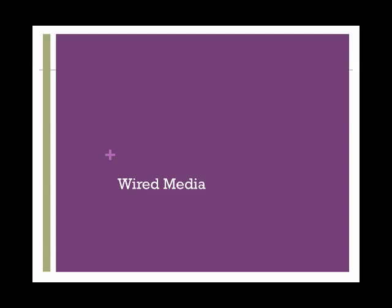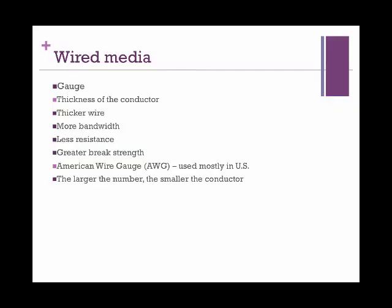Now let's get into the details of the transmission channels. We will begin with wired media. Wired solutions ruled and are still ruling the networks. There are a couple of things to consider when understanding wires. The first is its gauge — in other words, its thickness. The thicker the wire, the better the resistance to interference and the better the bandwidth. The thickness also counts for strength. Gauge is a standard metric for thickness — the larger the number, the smaller the conductor.